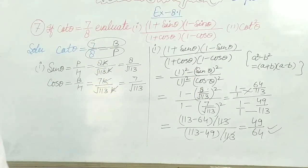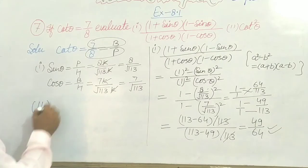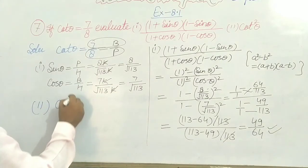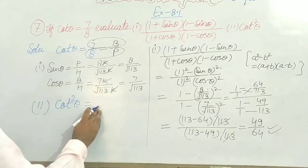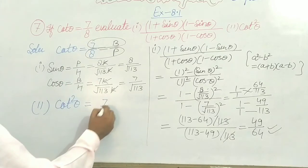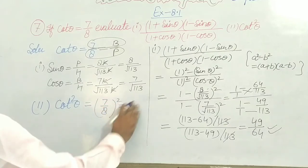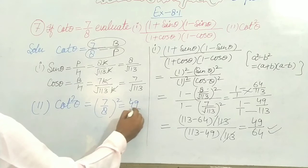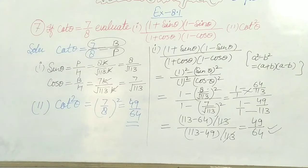That is our required answer for Part 1. For Part 2, we need cot²θ. The value of cot squared theta equals 49 over 64. This is the second answer.